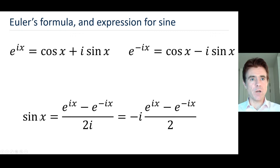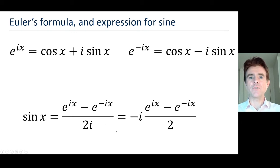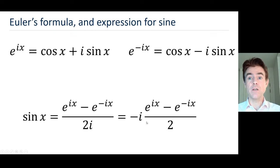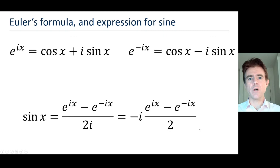We don't always use it in this form, because it's not very nice to have i, the square root of minus 1, in the denominator. So often the numerator and denominator are both multiplied by i. That means we get i squared in the denominator, which is minus 2, so we put the minus sign there. The numerator still has an i left, appearing as a multiplier for the whole expression. So sine x is expressed as a difference of two complex exponentials with the coefficient minus i divided by 2.